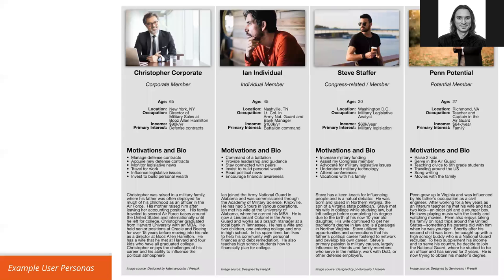Let's dig into this a bit. I know you can't read this, but these are several personas we put together for an organization called NAGUS — the National Guard Association of the United States. Being an association, they have members: corporate members and individual members, who are officers in the military or National Guard. We have four different personas — the corporate member, individual member, someone Congress-related like a Congress staffer, and a potential member, because studying someone's decision-making process means they aren't yet a member and then they become one.